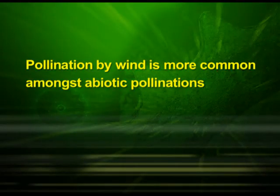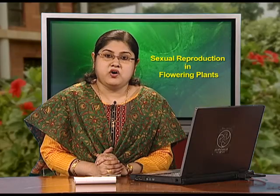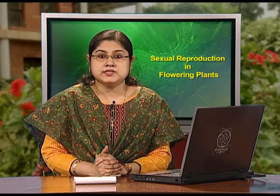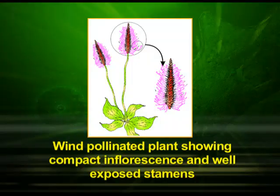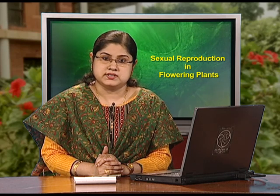Pollination by wind is more common among abiotic pollinations. Wind pollination requires that the pollen grains are light and non-sticky so that they can be transported in wind currents. They often possess well-exposed stamens so that pollens are easily dispersed into wind currents, and large, often feathery stigmas to easily trap airborne pollen grains. We can observe a wind-pollinated plant showing compact inflorescence and well-exposed stamens in this diagram. Wind-pollinated flowers often have a single ovule in each ovary and numerous flowers packed into an inflorescence. A familiar example is the corn cob — the tassels are nothing but the stigma and style which wave in the wind to trap pollen grains. Wind pollination is quite common in grasses.